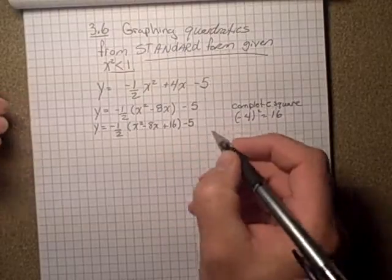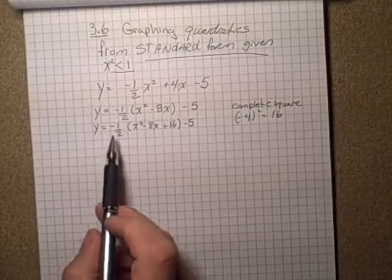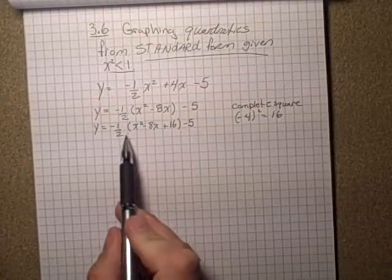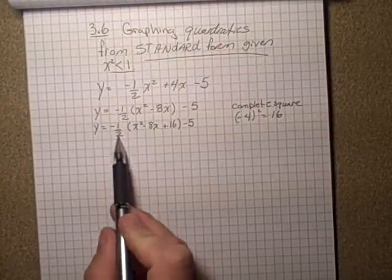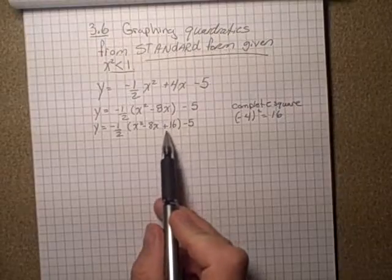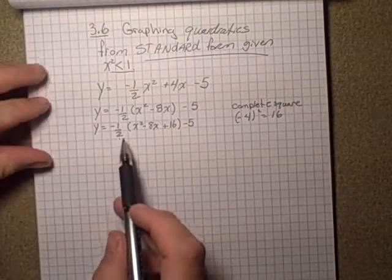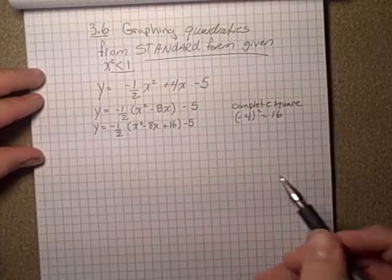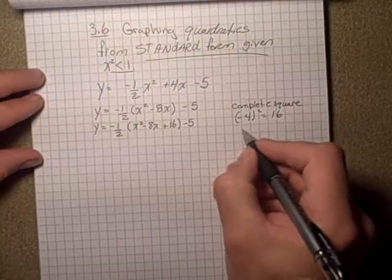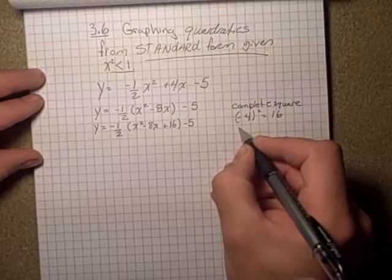Now you have to be careful here. What did you actually add to your question? Well, you actually added negative 1 half times 16, so that's what's going to have to be taken over here. Negative 1 half times 16 is negative 8, so you have to add 8 out here.